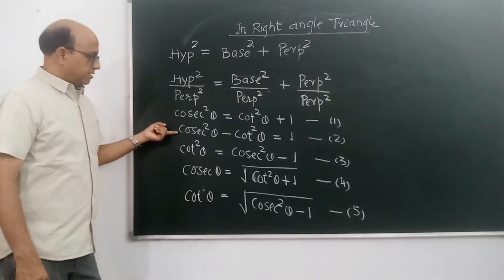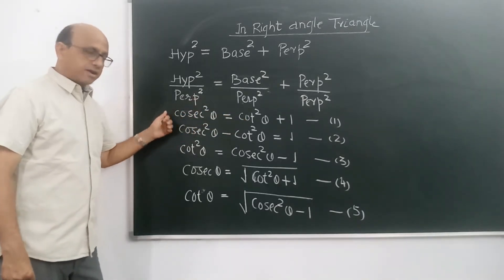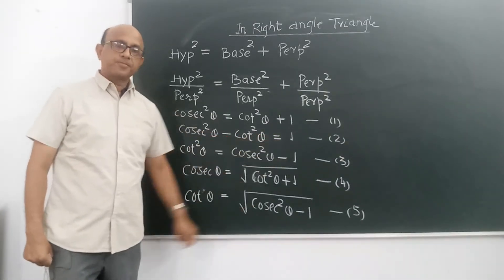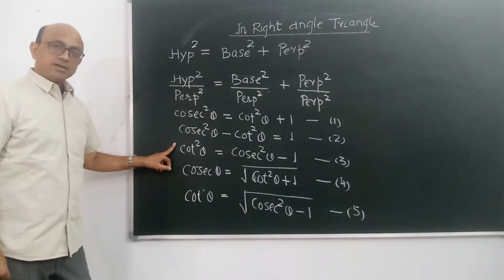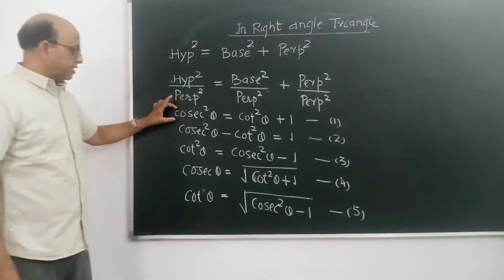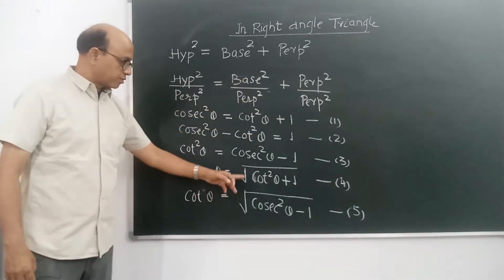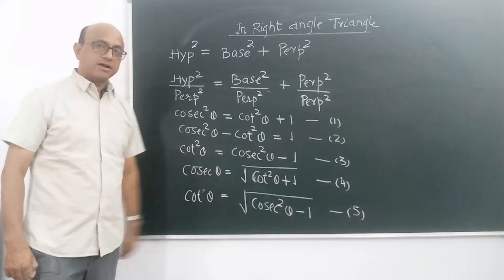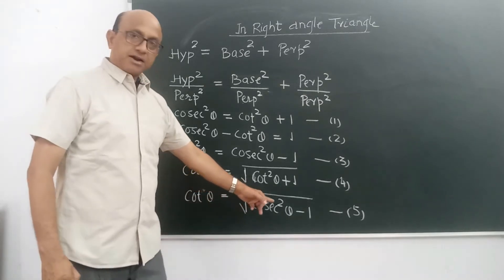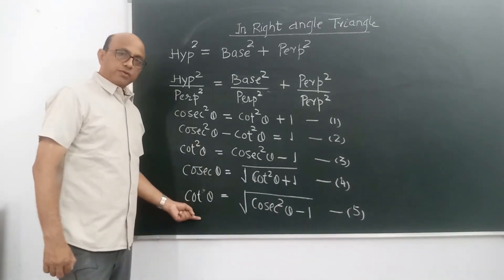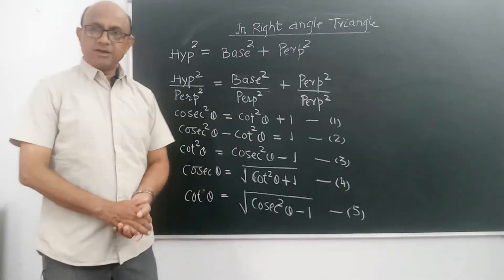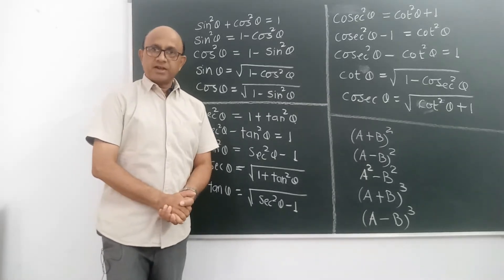Next equation: cot square theta ko shift karein to cosec square theta minus cot square theta is equal to 1. Cot square theta is equal to cosec square theta minus 1. Agar cosec theta ki value chahiye to square root lagaiye: cosec theta is equal to square root of (cot square theta plus 1). Similarly, cot theta is equal to square root of (cosec square theta minus 1). In this way yeh 5 relationships cosec aur cot theta ke beech mein pata laga liye.